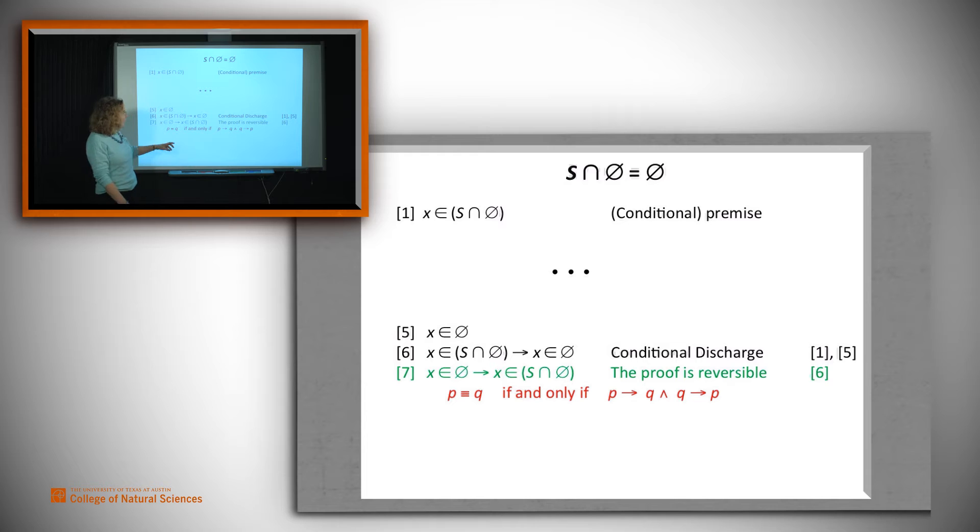Now recall that two claims are equivalent just in case P implies Q and Q implies P. That's the definition of P is equivalent to Q. So let's use that. And using that definition, we get that the claim that x is in one of the two sets is equivalent to the claim that it's in the other one.